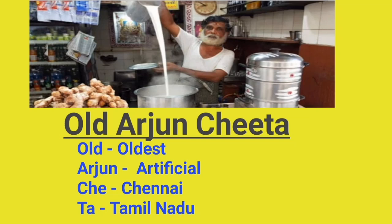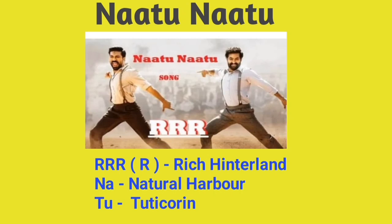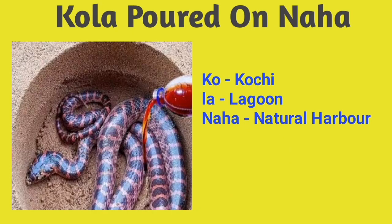Next, the Natu Natu song. R, R — R represents Rich Hinterland. Natu — N, A stands for Natural Harbour, T, U stands for Tuticorin. So Tuticorin has a Rich Hinterland and Natural Harbour. Next, 'Colag Port on Naha': K, O stands for Kochi, L, A stands for Lagoon, and N, A, H, E stands for Natural Harbour. So Kochi is a lagoon-based Natural Harbour.